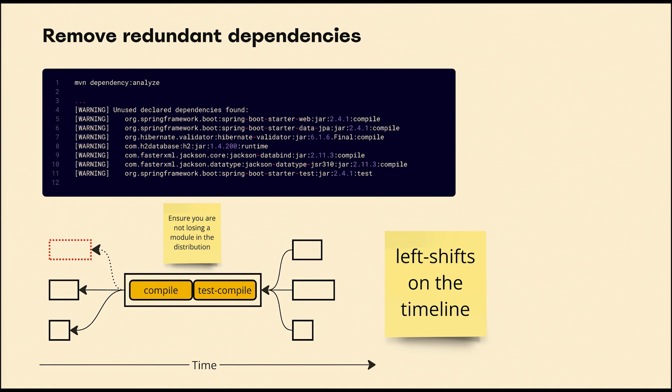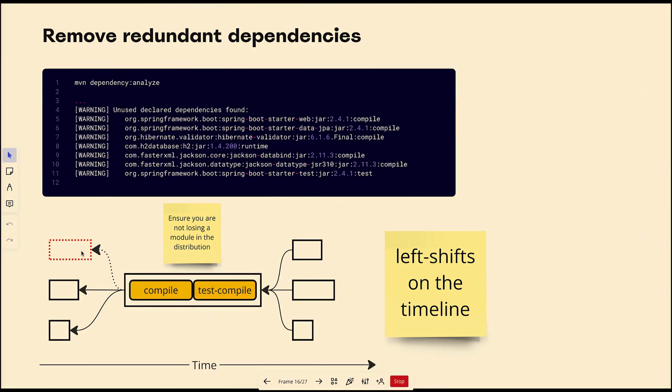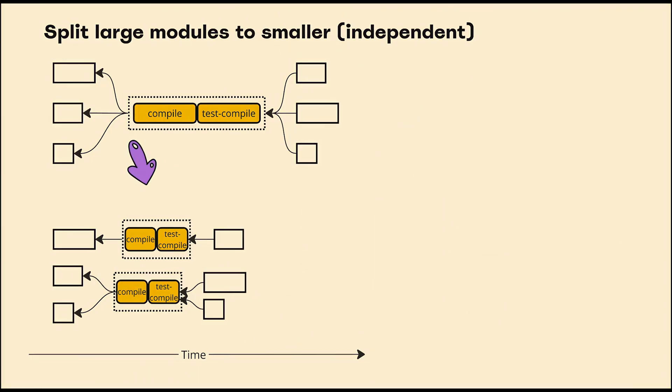Maven has a dependency analysis plugin that can advise which dependencies are redundant, which we can remove. If we reduce the number of dependencies of a module, it can be scheduled earlier in the pipeline. If it's scheduled earlier, its build finishes earlier and it becomes available for other modules sooner. On the timelines, everything shifts left, meaning it executes faster.